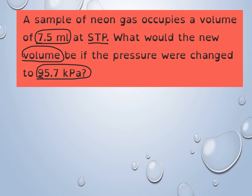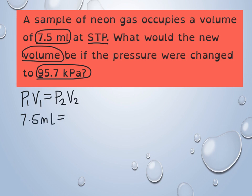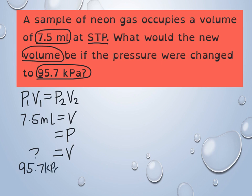We're working with Boyle's Law, so the equation is P1V1 = P2V2. Let's identify the variables. We have 7.5 milliliters, which is a volume. They tell us STP. We're finding a new volume. And they give us a pressure of 95.7 kPa.